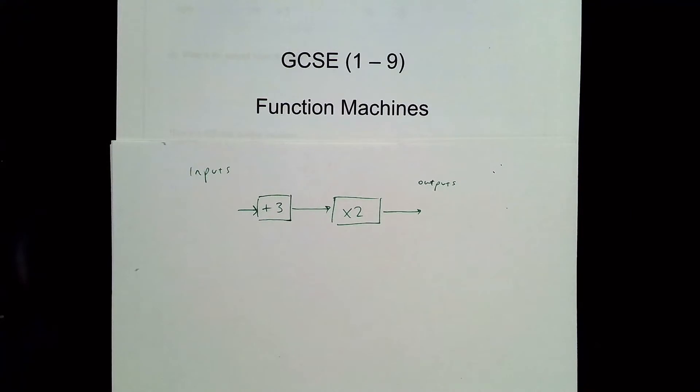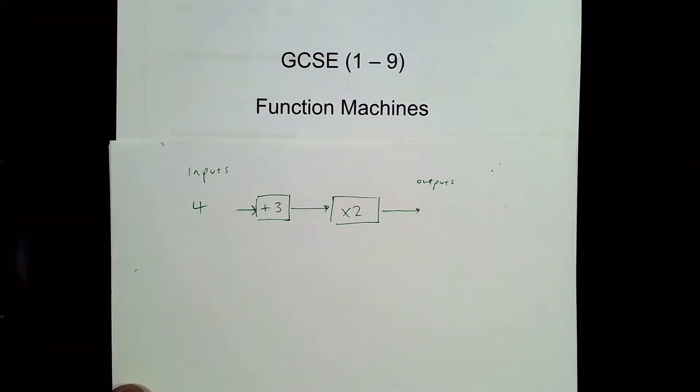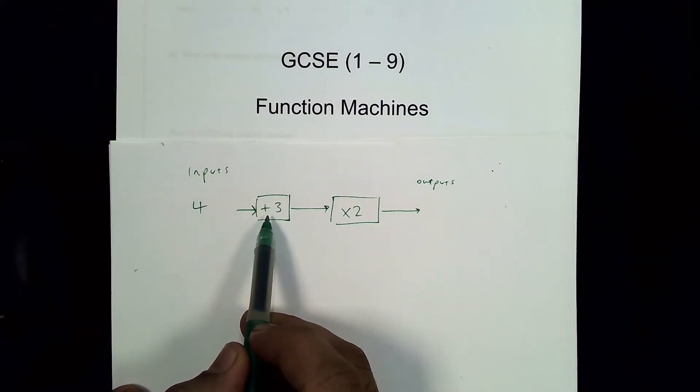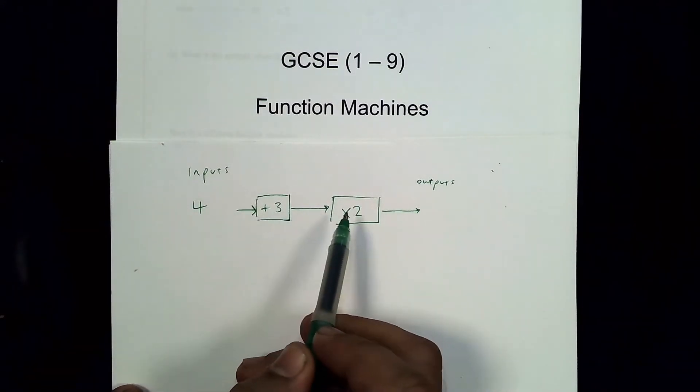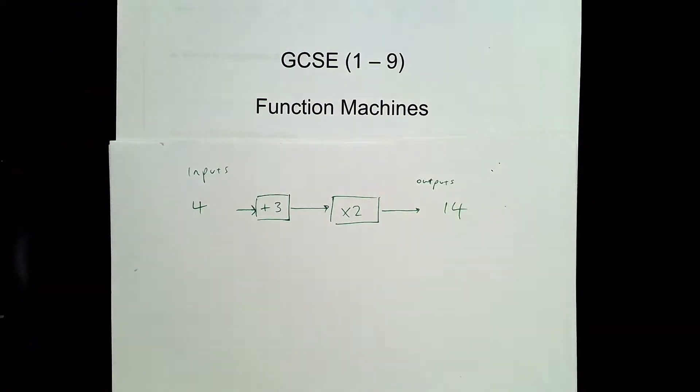So this is a two-step function machine: add three and then multiply by two. For example, if I put the number four into this machine, four add three will give me seven, seven multiplied by two will give me fourteen. So the output you get is fourteen when you put four in. That's the basics of a function machine.